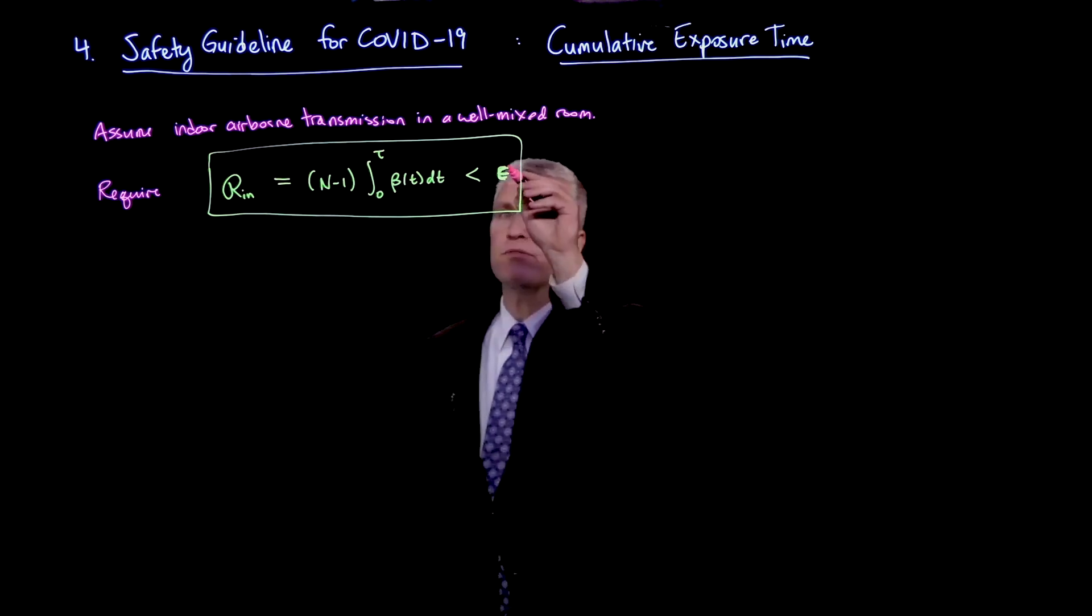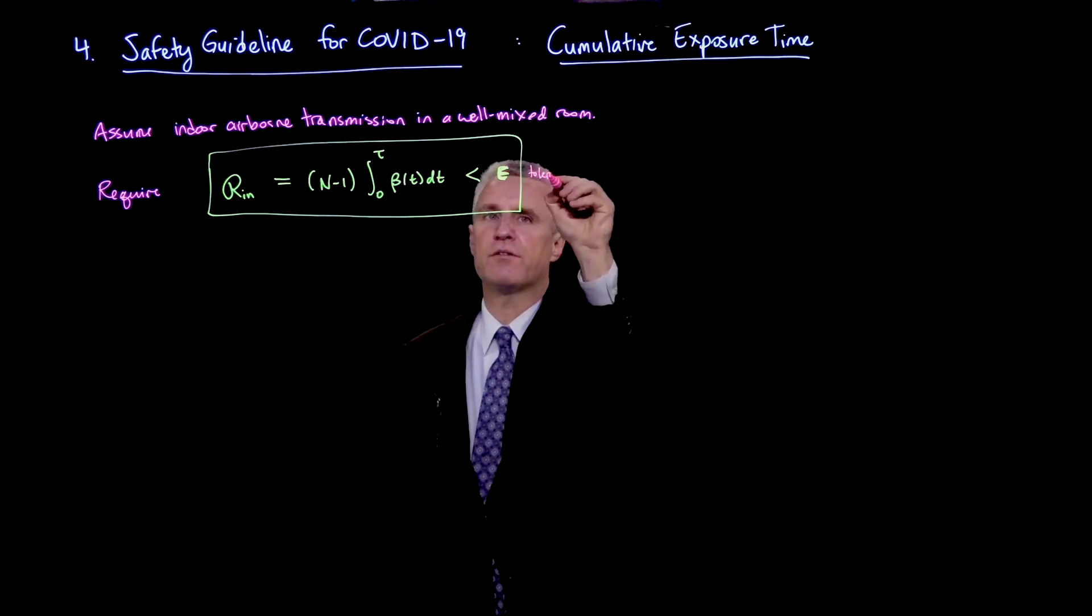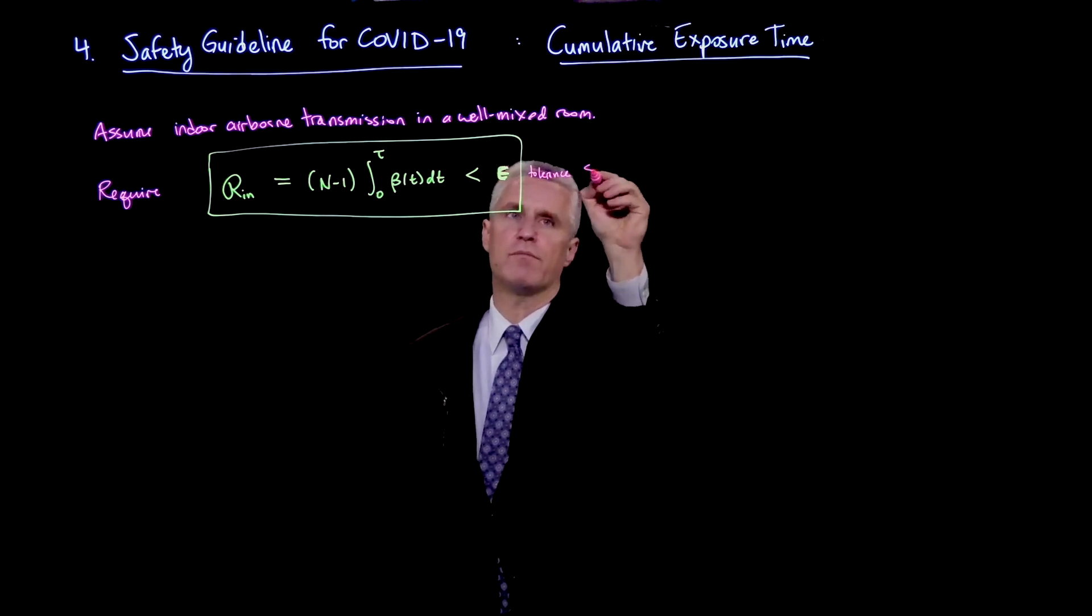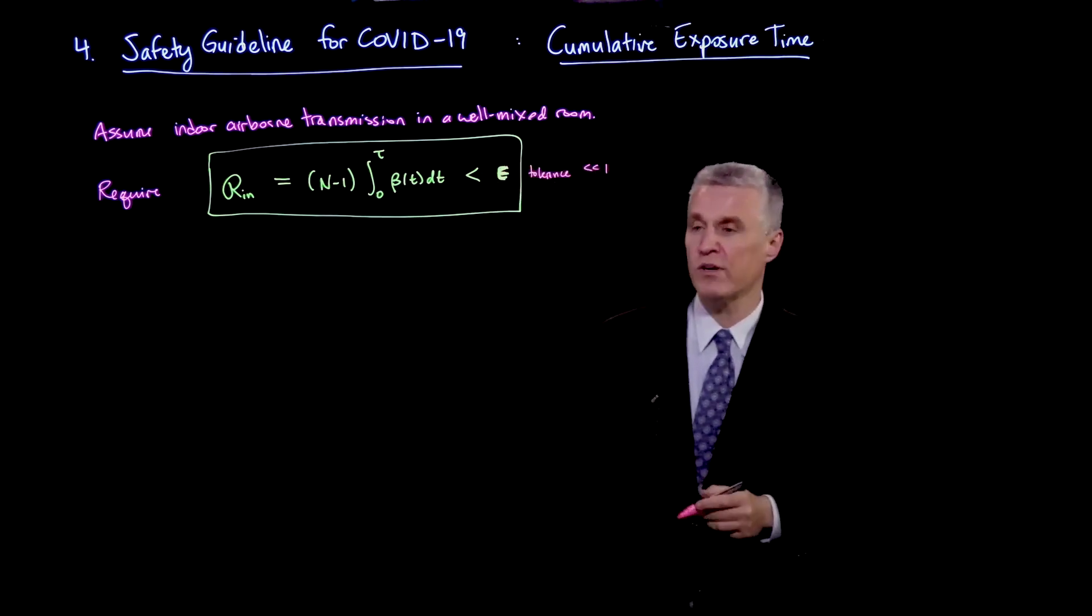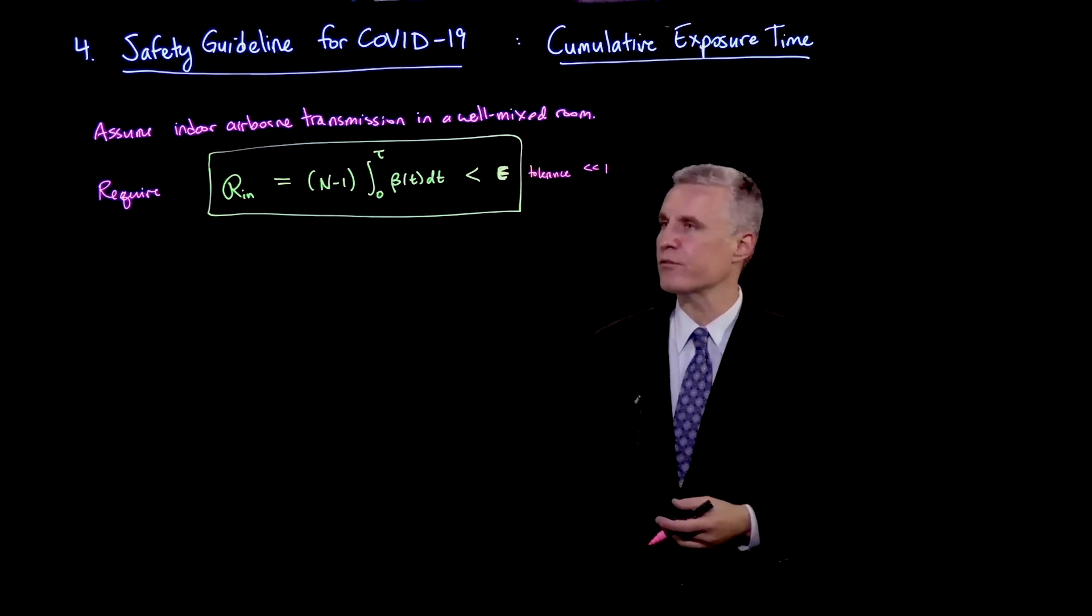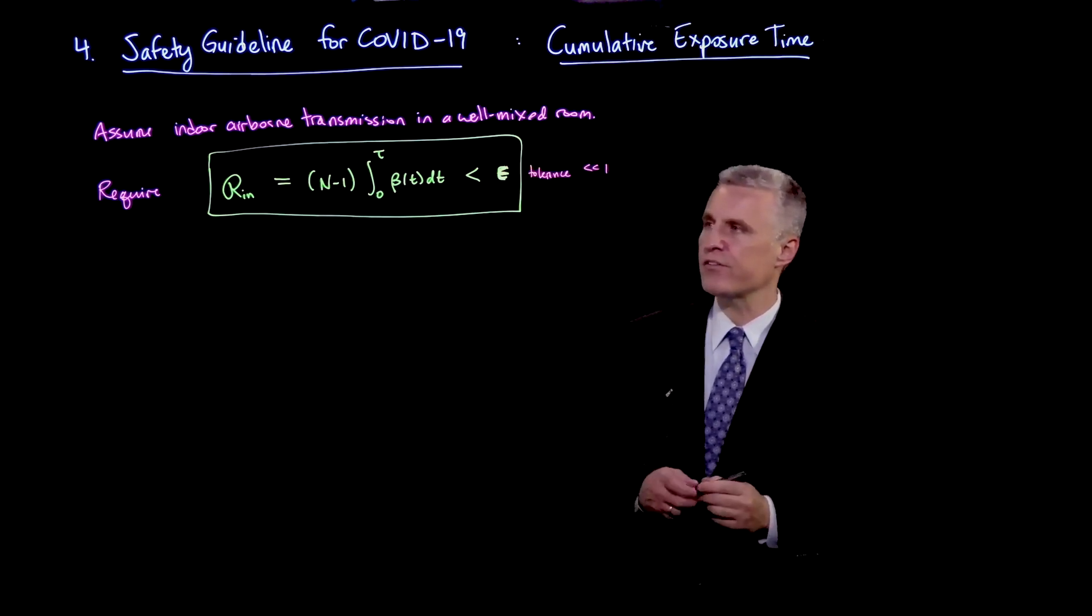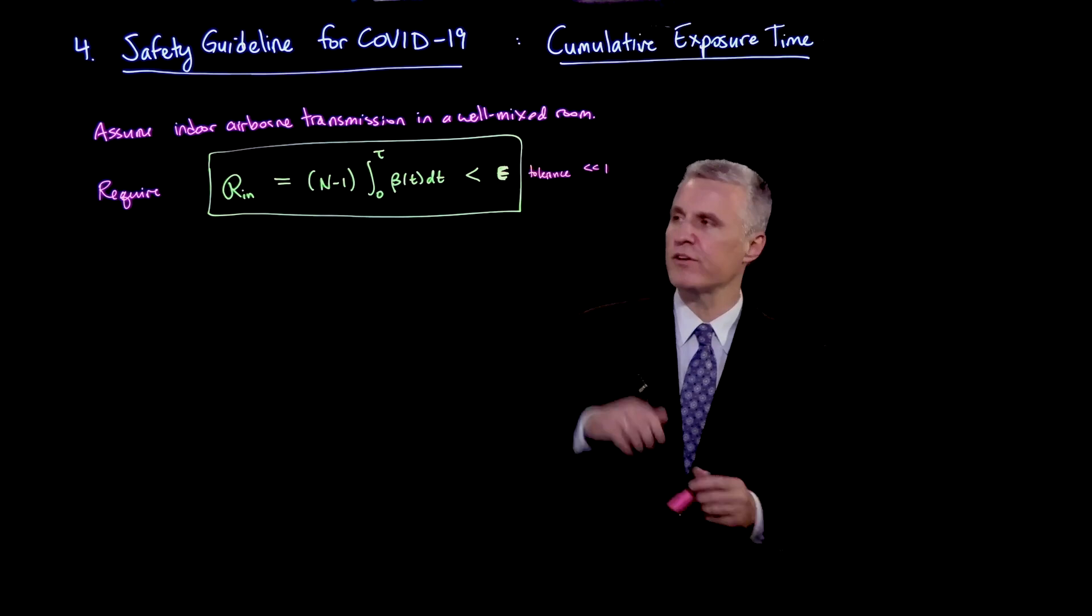So this epsilon here is the tolerance. Typically, something might be a lot less than 1, or maybe you could allow it to be closer to 1. And so that is essentially the probability of a transmission.